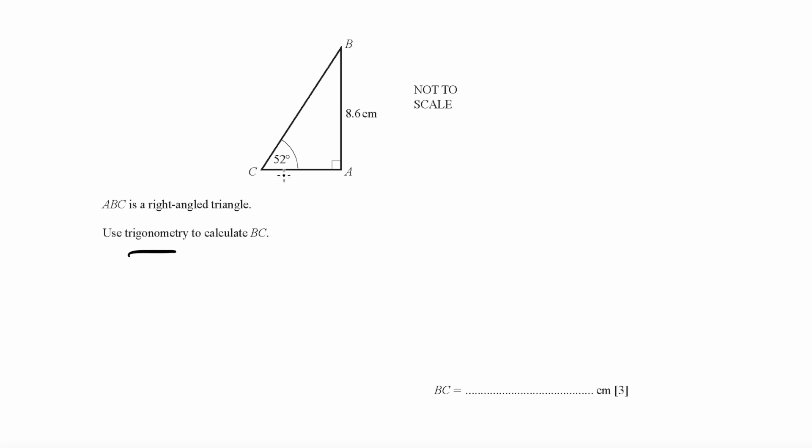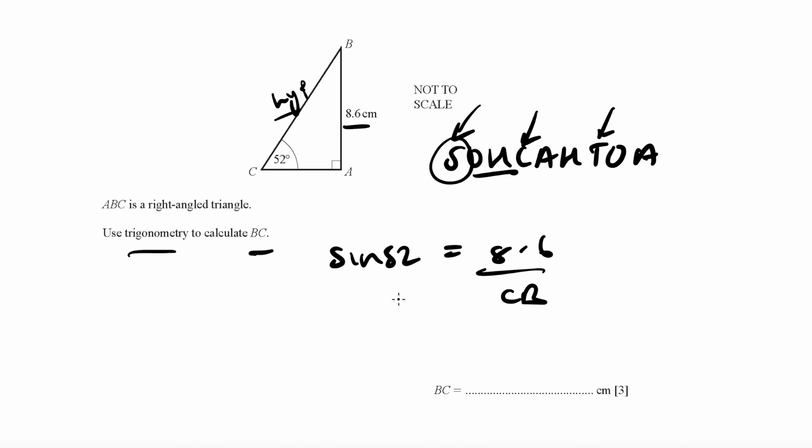This is a question on trigonometry. In these questions, you need to remember SOHCAHTOA, where this is sine, this is cos, and this is tan. In this case, we need to find BC, which is the hypotenuse. We have the opposite and the hypotenuse, so if we have opposite and hypotenuse, you use sine. So sine 52 equals 8.6 over CB. You can then therefore make CB the subject of the formula, and that will be 8.6 over sine 52, and you can find your value of BC.